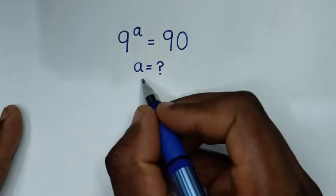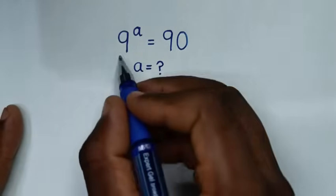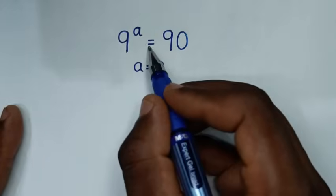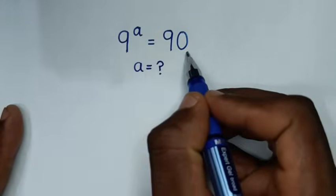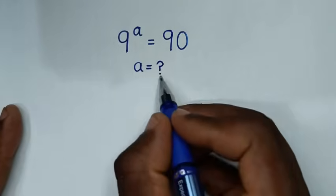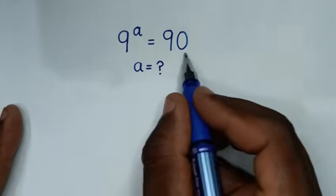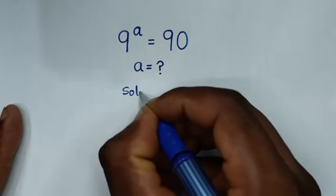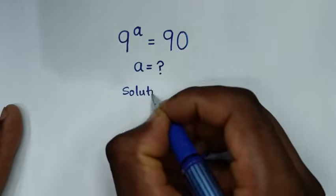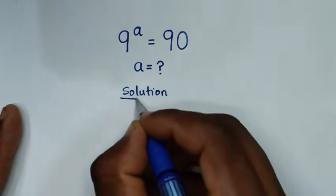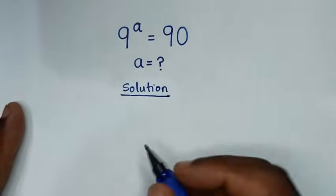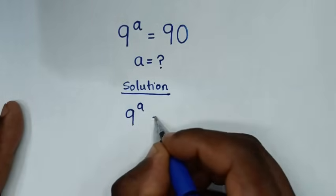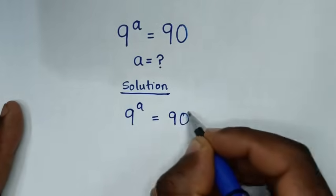Hello, you are welcome to solve this math problem: 9 to the power a is equal to 90. We need to find the value of a from this equation. Now, solution. From our problem, 9 power a is equal to 90.